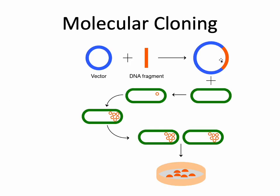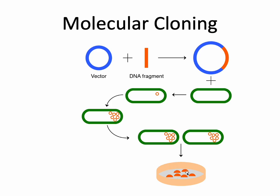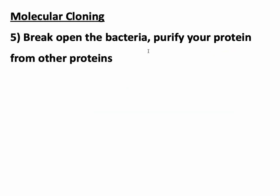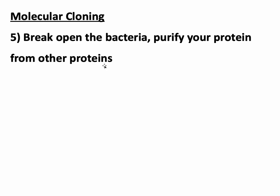Once this gene within a plasmid is in the bacteria, the bacteria will grow and divide. Because the E. coli genetic code is the same as everyone else's genetic code, they will express that gene as you let them grow. They will express that gene and make the protein of interest. This figure stops at showing little colonies of bacteria, but if we continue until we actually have protein in hand, we need to bust open these bacteria and purify your protein from all the other proteins — because these are living things making your protein along with everything else they need to survive. Purify your protein, and there we go: we have our protein of interest at a very high concentration.